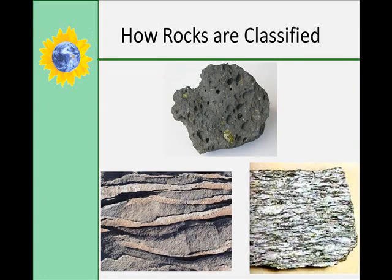Rocks can be classified according to their origin, or how they were formed. The name applied to a rock depends upon how the rock was formed. Igneous rocks form from the cooling of magma. Metamorphic rocks form from the alteration from pressure or heat or both. And sedimentary rocks form from cemented sediments in ocean floors, lake beds, wind areas, etc.